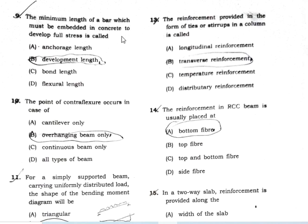The minimum length of a bar which must be embedded in concrete to develop full stress is called the development length.